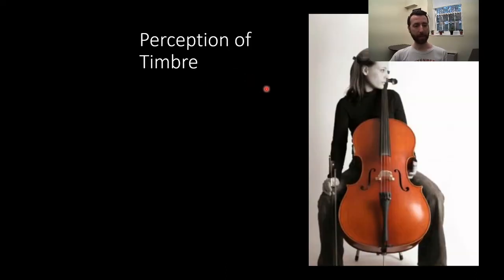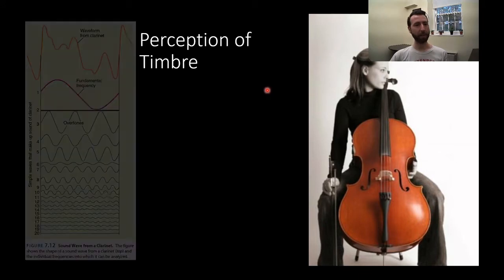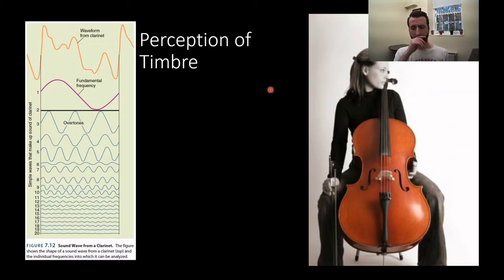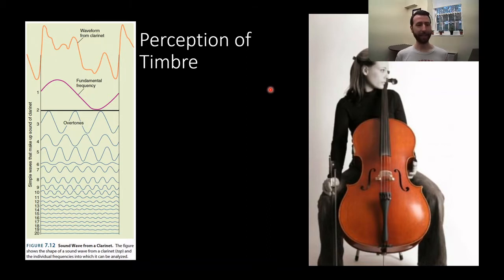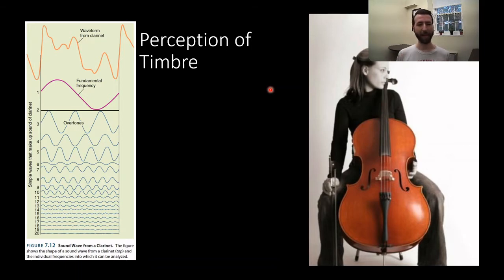The perception of timbre is a little bit more complicated to explain. If you're listening to someone play a cello, it's a very distinct sound. Somebody plays a middle C note on a cello, and you can tell instantly it is not a middle C note on a piano or a trumpet, despite the fact that they have the same frequency — the same pitch — and maybe even the same loudness. But they sound different. A cello sounds cello-y. It doesn't sound like anything else.